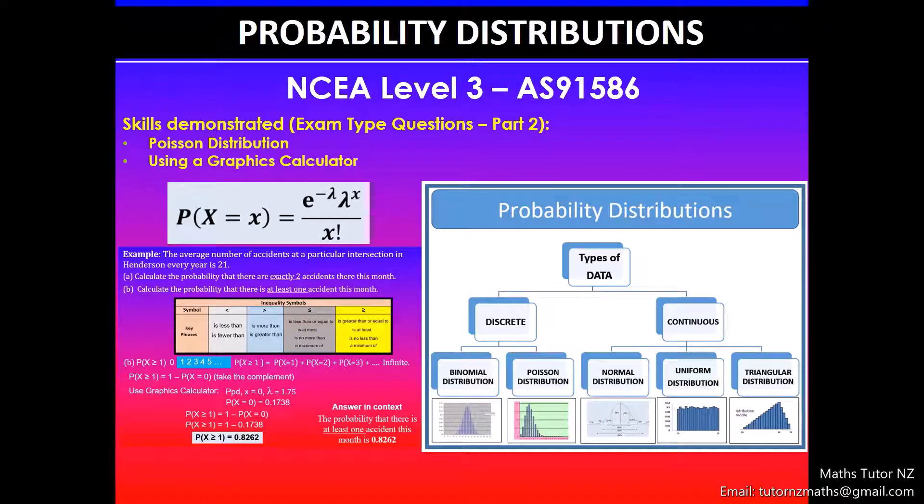Greetings everyone. In this video we'll be looking at exam type questions on NC level 3 probability distributions achievement standard. We'll be looking at Poisson distribution and using a calculator to find the unknown probabilities.